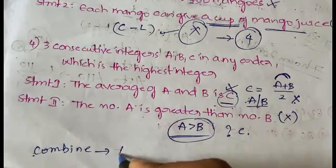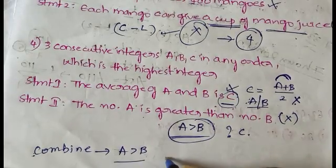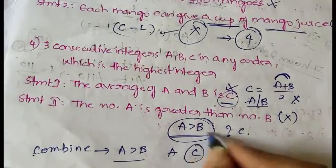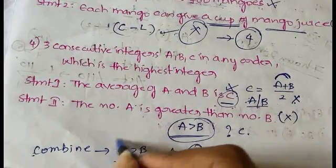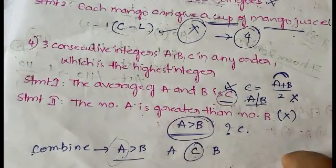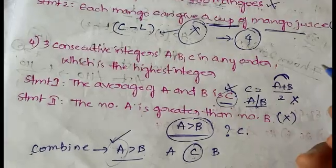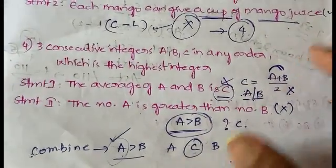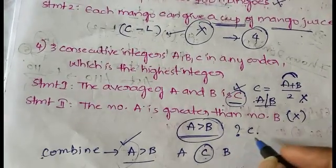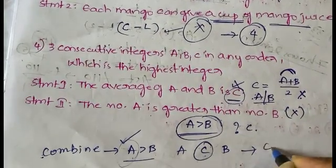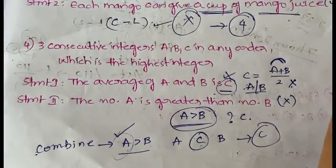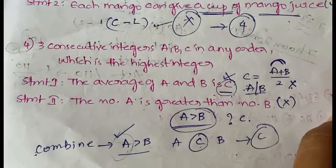Combining both statements: from statement two, a > b; from statement one, c lies between a and b. So c is not greater than a. Therefore a is the greatest number. You can determine the answer only by combining both statements, so the answer is option C.